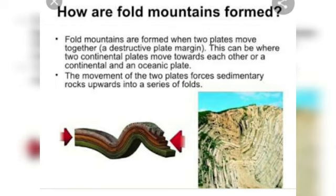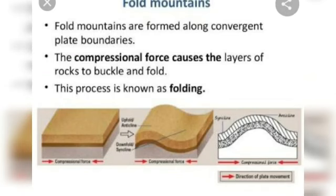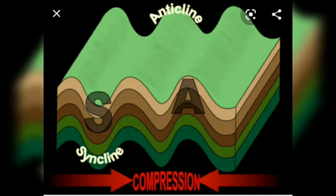The limb of the mountain that moves up is known as the anticline, and the limb that goes down is known as the syncline. The arrangement of anticlines and synclines gives us the formation of fold mountains, caused by the compressional forces of the earth.